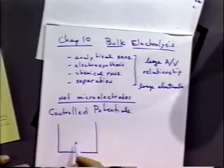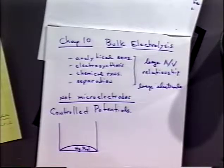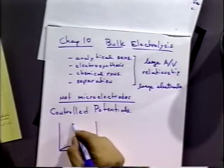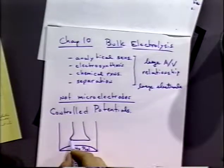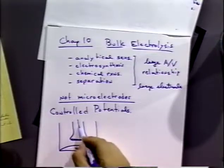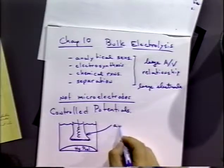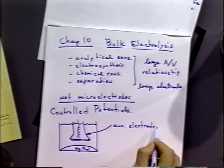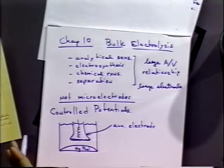Let's sketch a cell. You might have a mercury pool as the working electrode — the bottom of the beaker covered with mercury — so that's a large electrode, perhaps a few tens or hundreds of square centimeters. The auxiliary electrode is often in a separate compartment, separated by a glass frit. Whenever we do a reaction at the working electrode, an equal and opposite reaction has to occur at the auxiliary electrode — the same amount of current has to flow out of both.